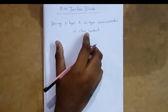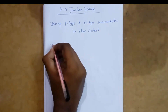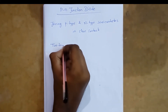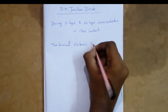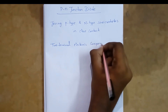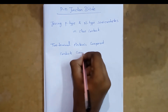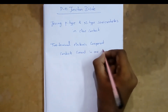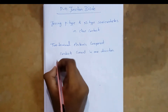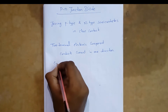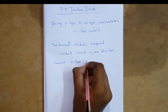PN junction diode is a two-terminal electronic component which conducts current in one direction only. Current flow is in one direction only.